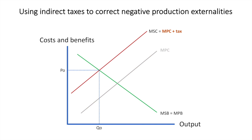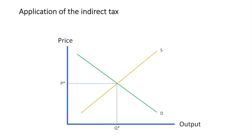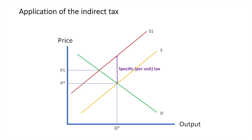The end result would be that the marginal private cost plus the tax would equal the marginal social cost. In the next slide, we'll see the market equilibrium for a good before and after a tax is applied. The initial equilibrium for this good is P star, Q star. Once the government imposes a specific tax, it would shift the producer's supply curve leftward by the amount of the tax due to the increased cost of production, which would result in a higher market price of P1 and a lower market quantity of Q1.